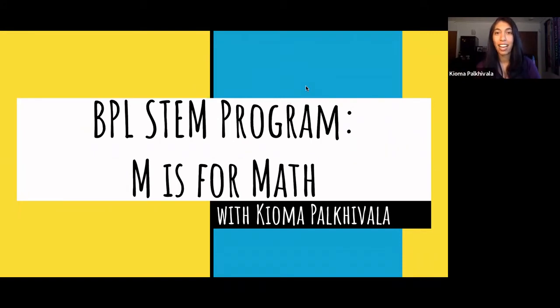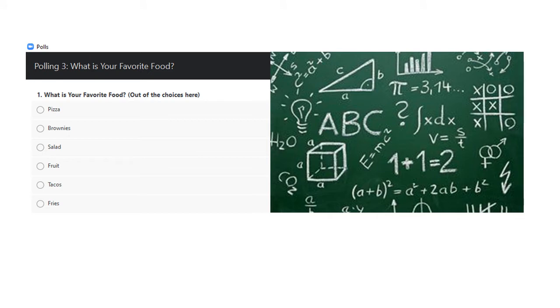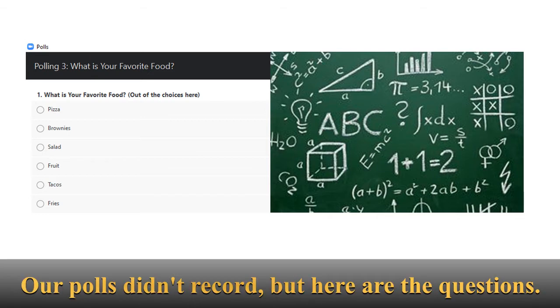The third question that we wanted to ask is about your favorite food. You've got some great choices here: pizza, brownies, salad, fruit, tacos, fries. I know for me, my number one is always going to be fries. You cannot beat fries. Let's see if the group agrees with me. Fries is not getting enough love. It looks like our audience is heavily skewed with their favorite food. Pizza is the clear winner. I'm not mad about it, but fries is definitely holding a special place in my heart.